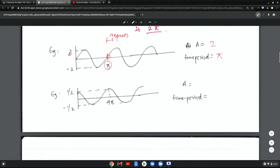So the time period is pi, the amplitude is the maximum value which is 2. Over here again, right here from here it starts repeating. If you look at it, it looks the same as the first half. So the time period in this case is 4 pi and the amplitude is one half.